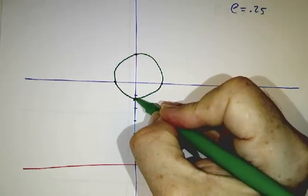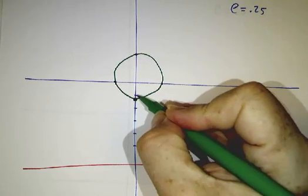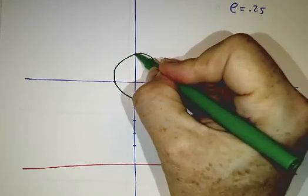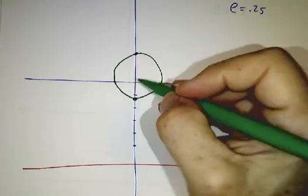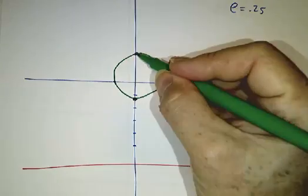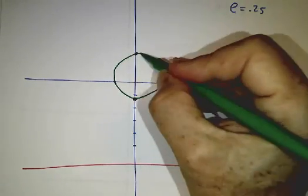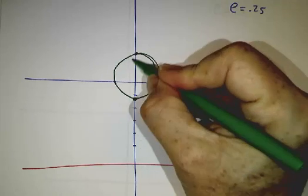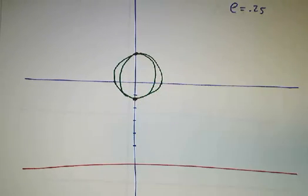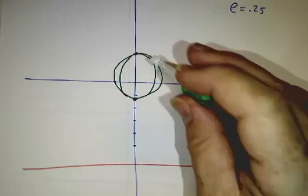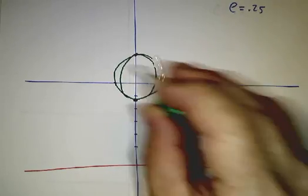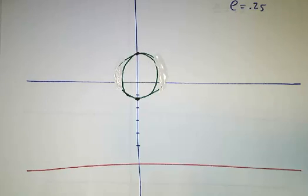Now we get something starting to be more elliptical. The perihelion — the point where you're closest to the directrix and closest to the focus — is at the bottom. The aphelion, where you're farthest, is at the top. This distance is significantly shorter than that distance. So that's what something with an eccentricity of about 0.25 looks like.